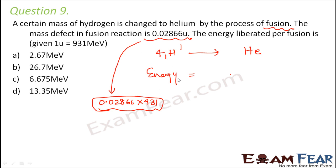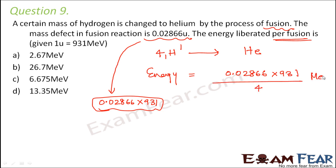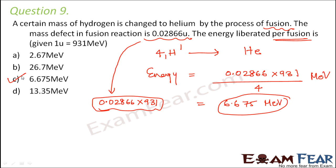Now, how many fusions are taking place? In one fusion reaction, four hydrogen atoms fuse together to give a helium. So the energy liberated per fusion = 0.02866U × 931 ÷ 4 MeV, which comes out to be 6.675 MeV. So option C is the correct answer.